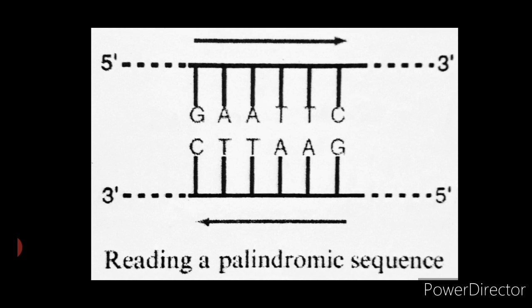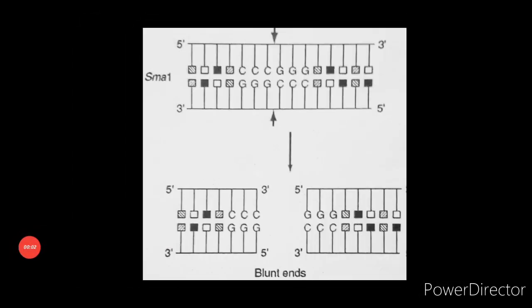Now let us understand what are blunt ends. Blunt ends: it cuts straight through both DNA strands right at the line of symmetry to produce fragments with blunt ends. If you all can see in the figure, restriction enzyme Sma1 cuts the DNA strand at the line of symmetry in between CCC and GGG to produce fragments with blunt ends.